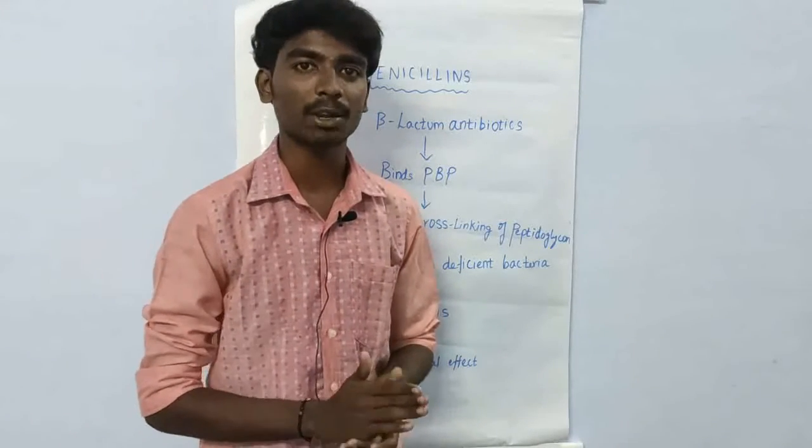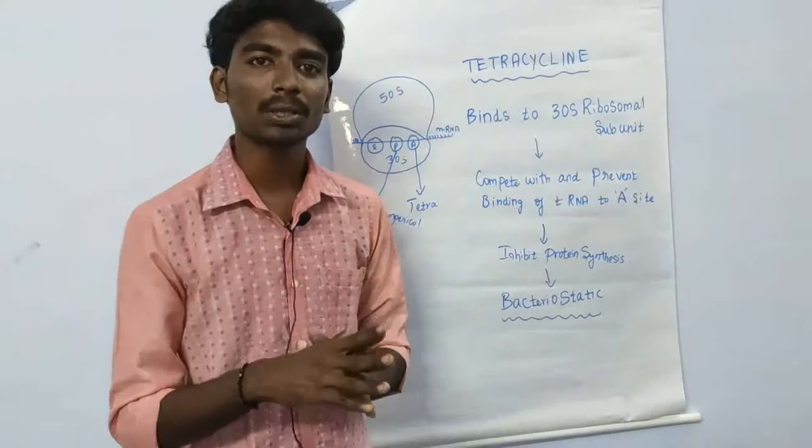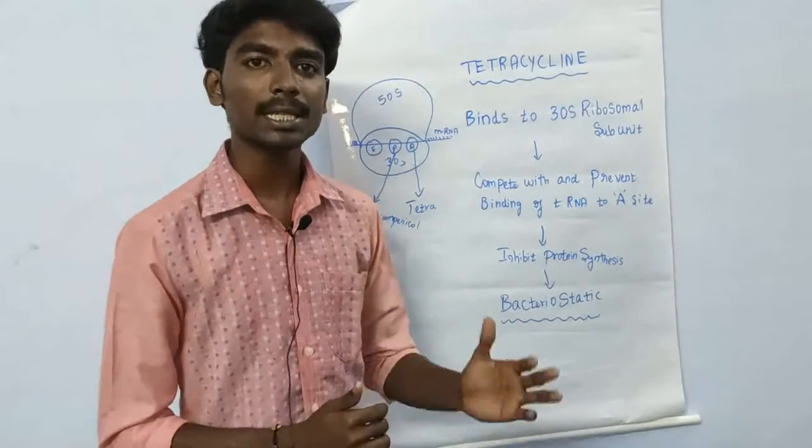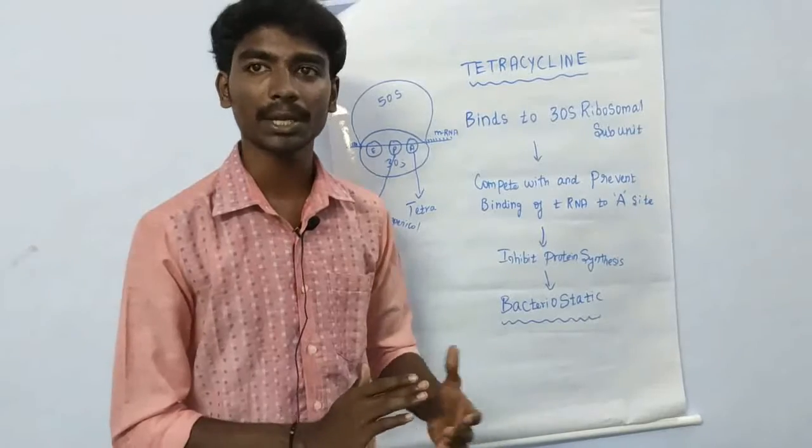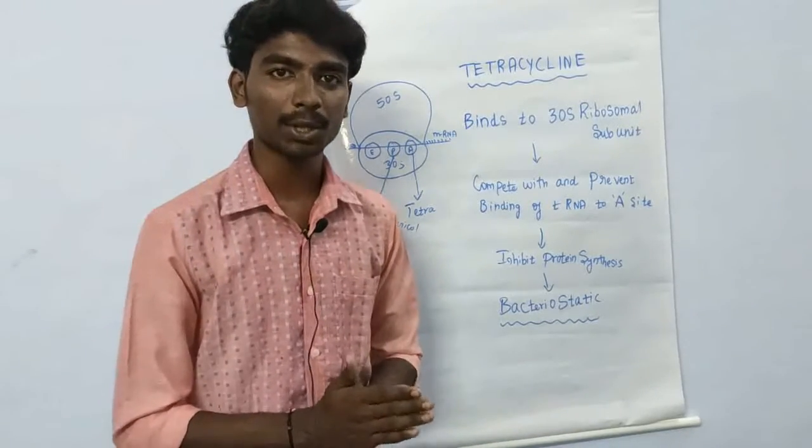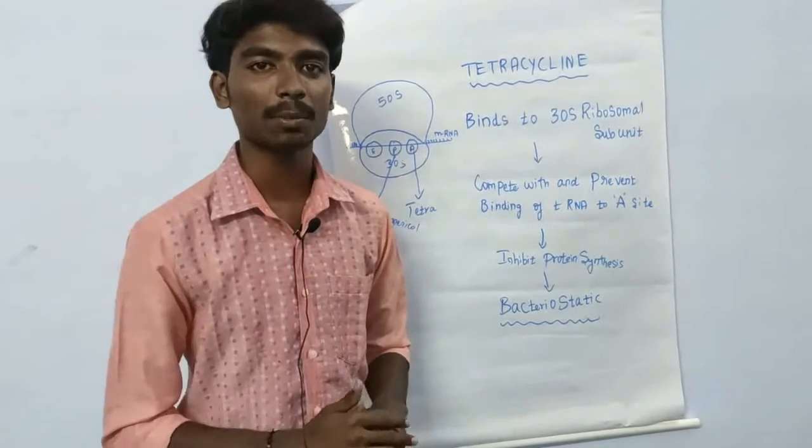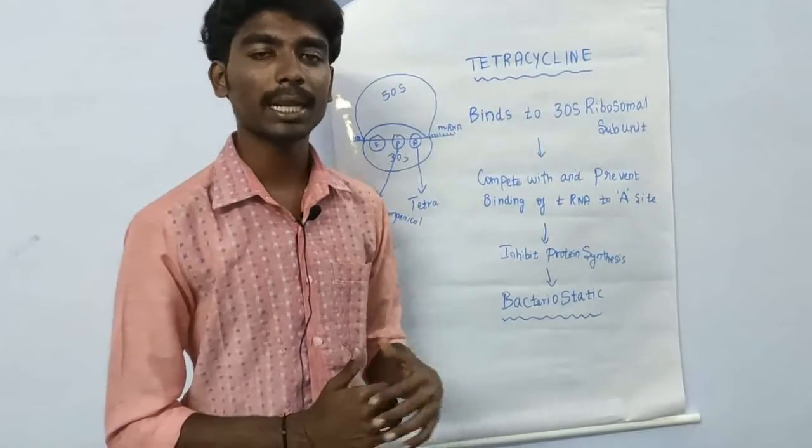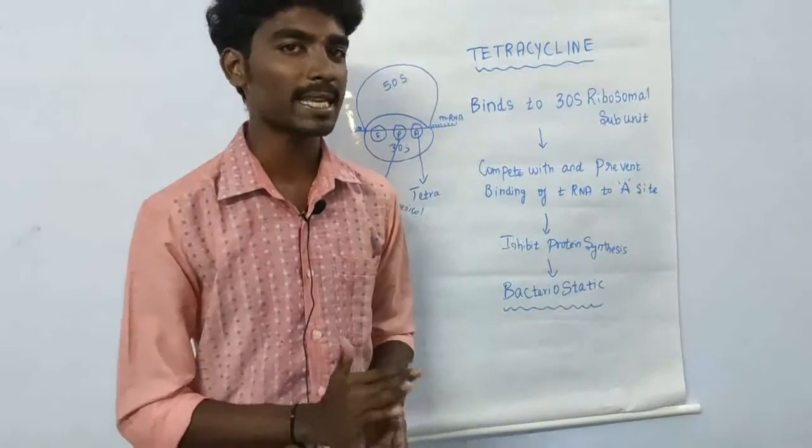Next is the tetracycline mechanism. This is bacteriostatic. The penicillin is produced by bactericidal, you can see the energy. The ribosome becomes the point.